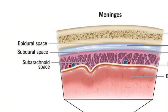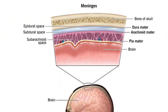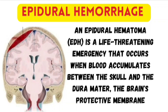Now that we've seen the layers and spaces around the brain, let's look at what happens when bleeding occurs within these spaces. Hemorrhages are classified based on where exactly the blood collects. Understanding the type of hemorrhage is crucial because it affects the patient's symptoms, treatment and prognosis. Let's begin with the first type: epidural hemorrhage, also called epidural hematoma or EDH.